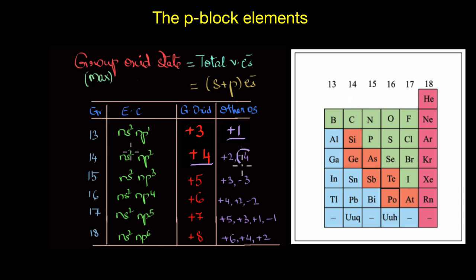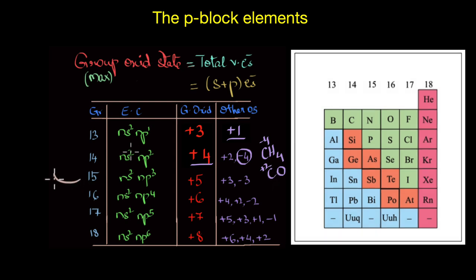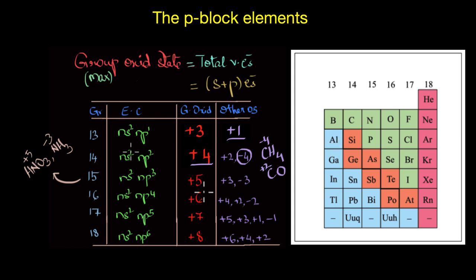Can you think of a compound where carbon exists in the −4 oxidation state? How about CH₄? In methane, carbon combines with the more electropositive element hydrogen, and its oxidation state becomes −4. Whereas in CO, where it combines with the more electronegative oxygen, the oxidation state of carbon is +2. For group 15, in nitric acid nitrogen exists in the +5 oxidation state, whereas in ammonia or most amines nitrogen exists in the −3 oxidation state.